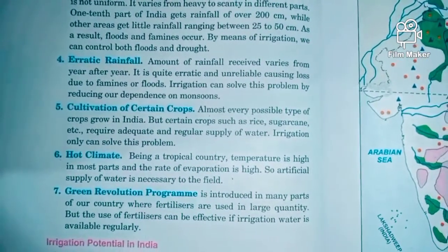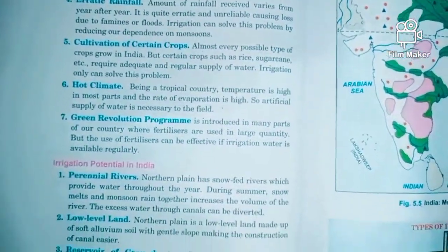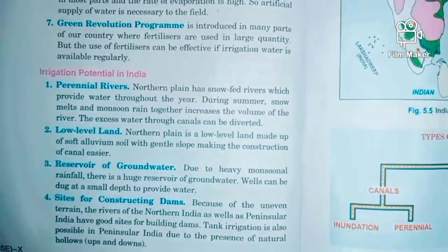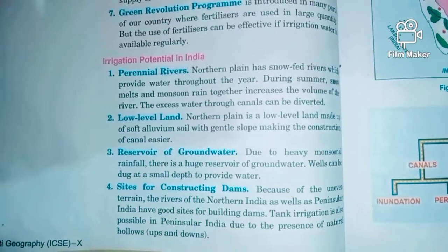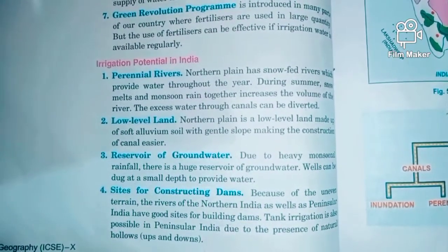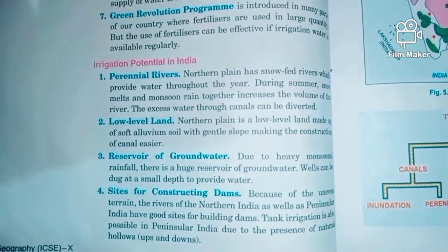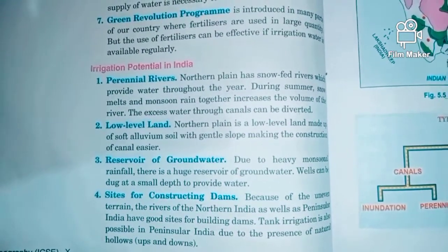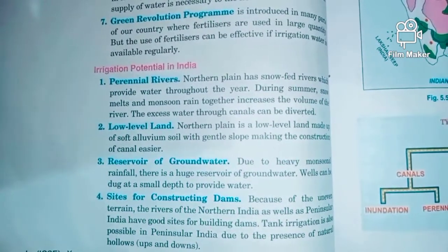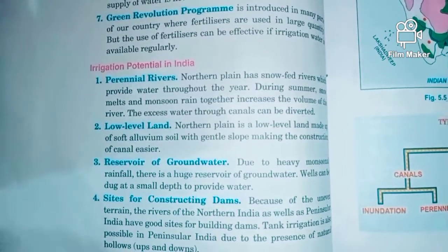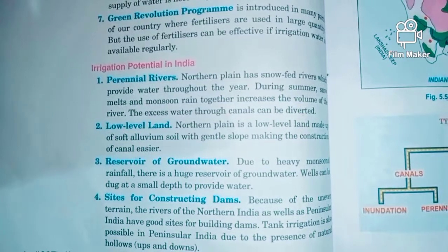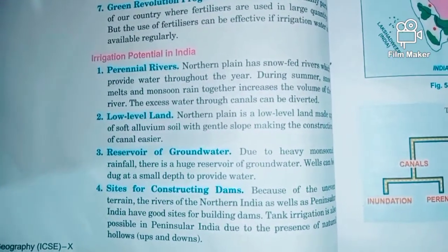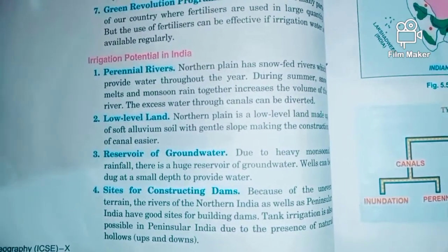Now that we know India needs irrigation, let's check whether India has the real potential for it. The first factor is perennial rivers. In the northern plains, there are snow-fed rivers that carry water throughout the year — in summer the snow from the Himalayas melts to provide water, and in the monsoon season rainfall increases the water volume. This excess water can be transferred through canals to dry areas, showing good potential for irrigation.